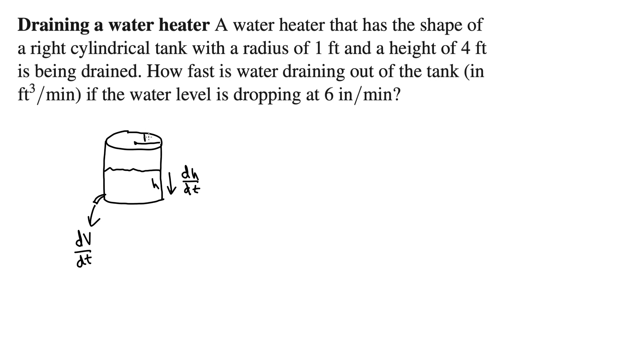And let's see, we have a radius of 1 foot. It's getting kind of busy there. And a height of 4 feet. Okay. Now let's list our givens, at least the important ones. So, given and goal.